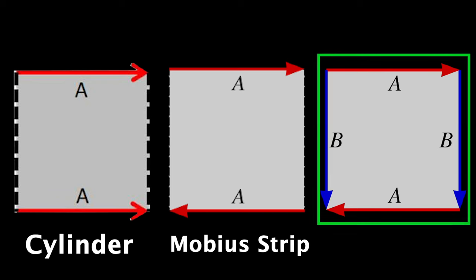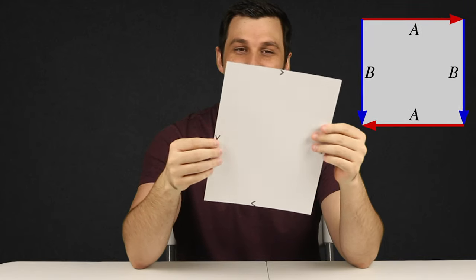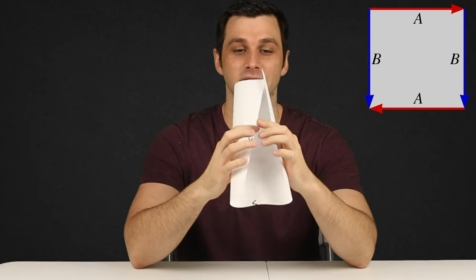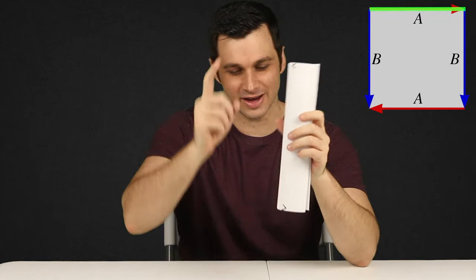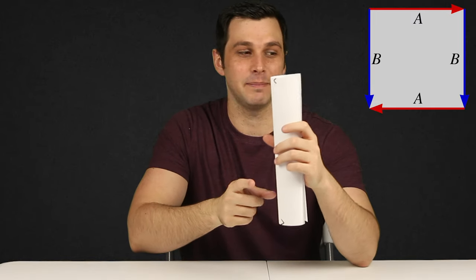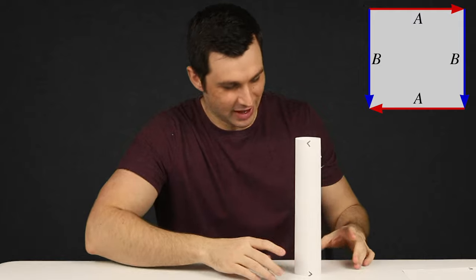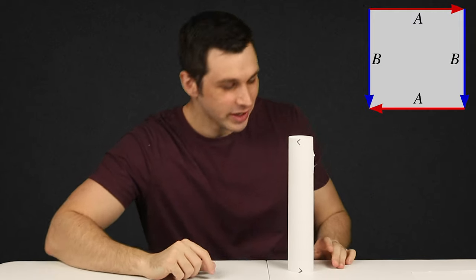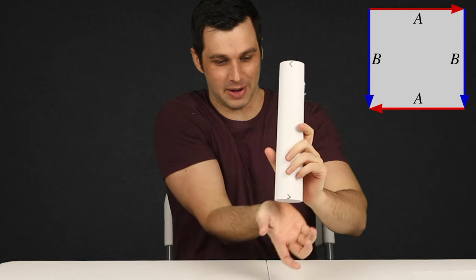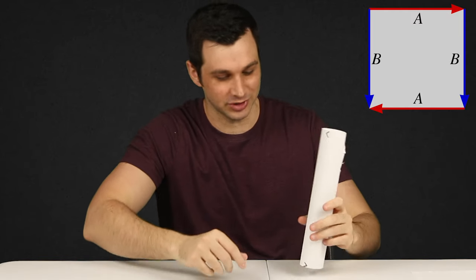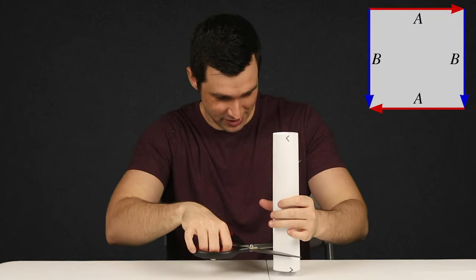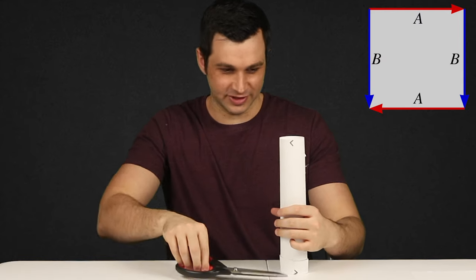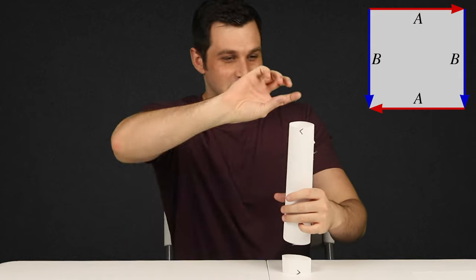Moving on, we have this last one, which, if you tried on your own with no prior knowledge, probably gave you a lot of trouble. Because what it says to do is connect these two sides just like the cylinder — no issues there. But now we have to connect this side to this one such that these arrows line up. Doing that would be very difficult because if I were to wrap around here, the arrows would be pointing in the opposite direction, which is not allowed. But what we can do instead is take the bottom and move it up here.